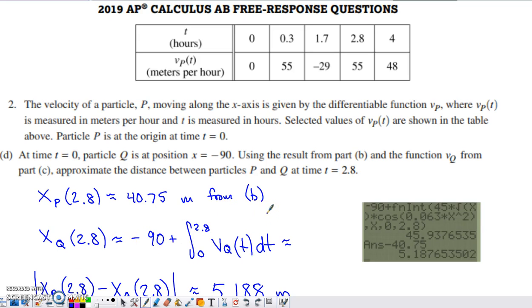The last part of the problem says that at time 0, particle Q is at x equals negative 90. We use that result from part B, so that was that trapezoidal sum, and the function V sub Q from part C to approximate the distance between these two particles at time 2.8. Back in part B, we had the integral of V sub P of T from 0 to 2.8 approximated by 40.75. If we want to know the position of particle Q at time 2.8, we have to take into account its starting position at time 0 and add on how much the position changes by from 0 up until 2.8 by integrating the rate of change of position, integrating the velocity function. I input this on the calculator, so x sub Q of 2.8 is approximately 45.938.